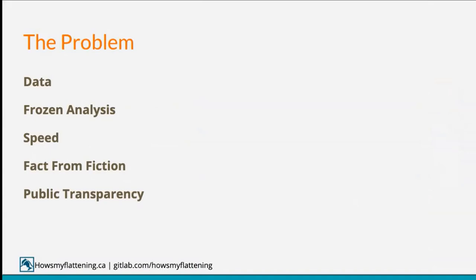The problem statement: we knew COVID was coming from the European example. The normal state of healthcare in Ontario — and probably many places — is that there's lots of data and it's not in one place. Some comes in PDFs, the government reports some stats on a website, but it's frozen. Any analysis that happens tends to be one-off, speed is a huge issue with things taking weeks if not months, and given what was happening in Europe, we were scared of what was going to happen here.